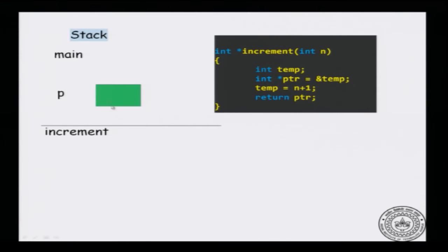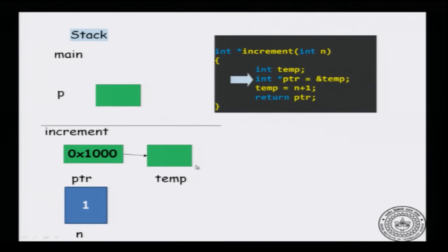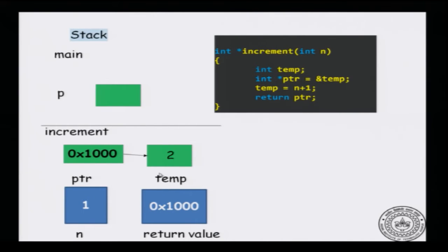What happens when we call the increment function? Inside the main function we have an int pointer p, not pointing to anything, and immediately we call increment(1). n is a local variable in increment — it is the argument, so n is 1. Then we declare a pointer ptr. Let us say that temp is at address hexadecimal 1000, so ptr contains 1000 and points to temp. In the next statement you increment temp: you set temp to n plus 1, so n is 1 and temp becomes 2. ptr points to temp.